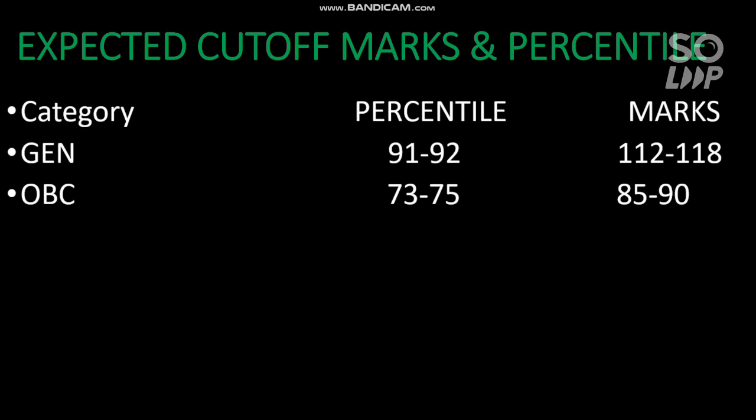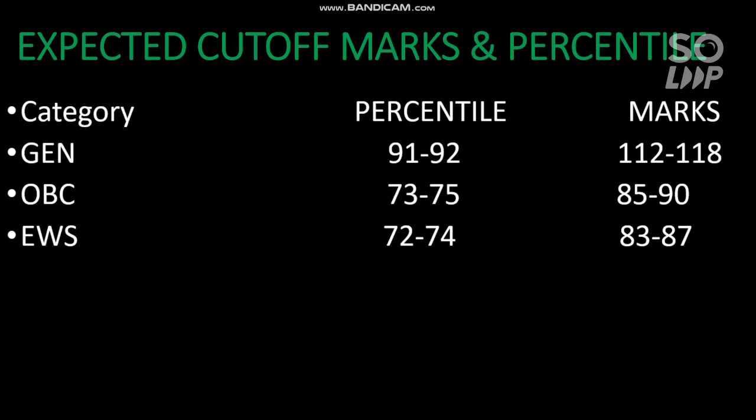For OBC, the cutoff percentile will be 73 to 75 and for that you need to score 85 to 90 marks in the third and fourth attempt of the JEE examination. For EWS, your cutoff percentile will be 72 to 74 and for that you need to score at least 83 to 87 marks.